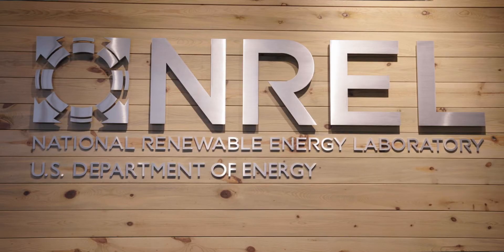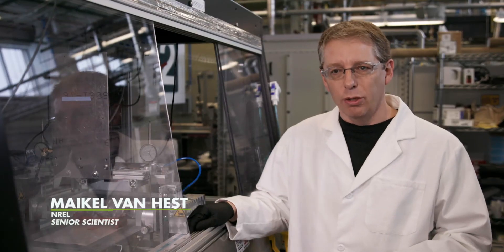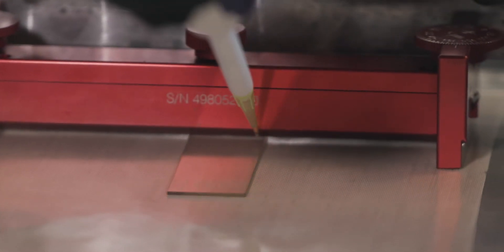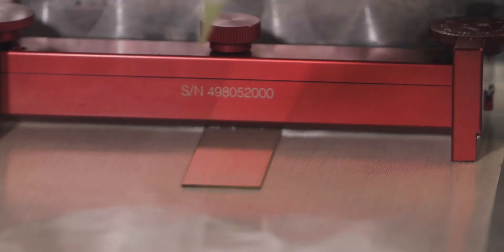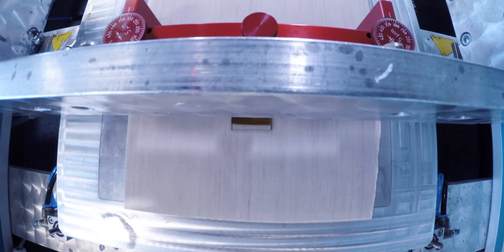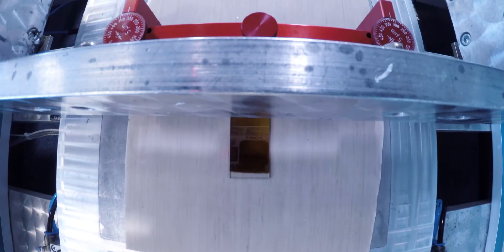What I will show you right now is how we scale our processing to a larger area. There's a small amount of ink here. We dispense it in front of the blade and then start moving this blade. Basically, the glass slide is now coated with the material.